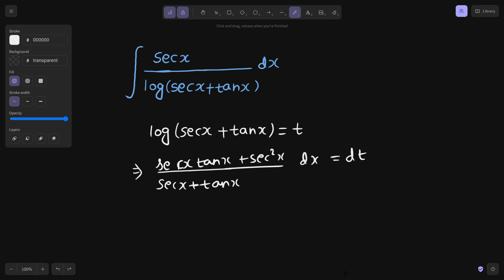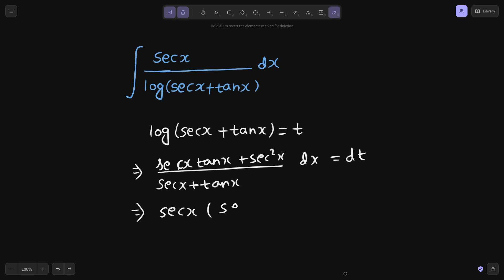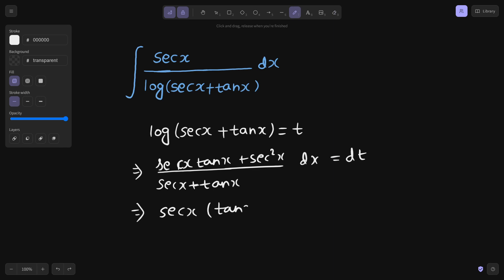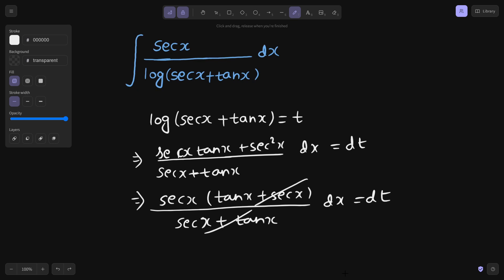You will get dx equals to dt. From numerator, you can take secant x common. Inside you will get tan x plus secant x divided by secant x plus tan x. And there you see this gets cancelled. You are left with secant x dx which as you can see is there in the numerator. So this is working for us.